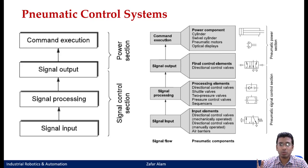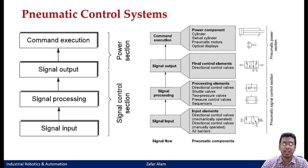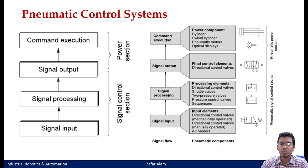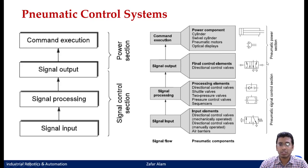In rotary actuators, if you engage one side of the valve, you will have circular motion in one direction, and if you engage the other envelope of the DCV, you will have counterclockwise motion. The final control element — that is the direction control valve — is actually an interface between your pneumatic signal control and your pneumatic power section.